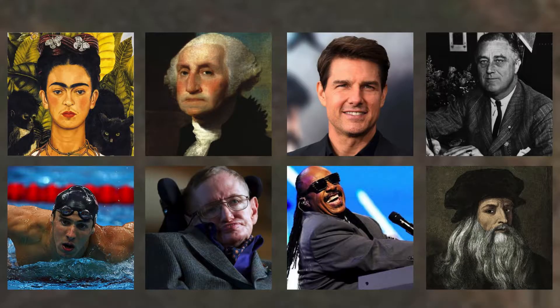Here we see a group of pictures of famous people — and it may surprise you that each of them has a disability. Starting at the upper left corner, we see Frida Kahlo, the famous Mexican artist born during the Mexican Revolution. She contracted polio at a very young age, walked with a limp her entire life, and was in a trolley car accident where a handrail speared her abdomen. It was in the hospital, in a full body cast, that she learned to paint.